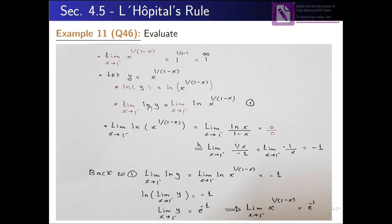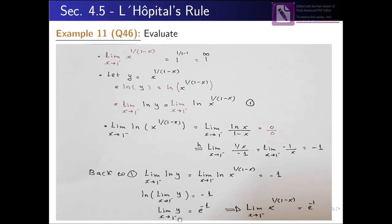So this part from equation 1 is equal to −1. We equate: limit of ln(y) as x→1⁻ equals −1. We can rewrite this as ln(limit of y as x→1⁻) = −1. To get rid of the ln, we apply e to both sides.